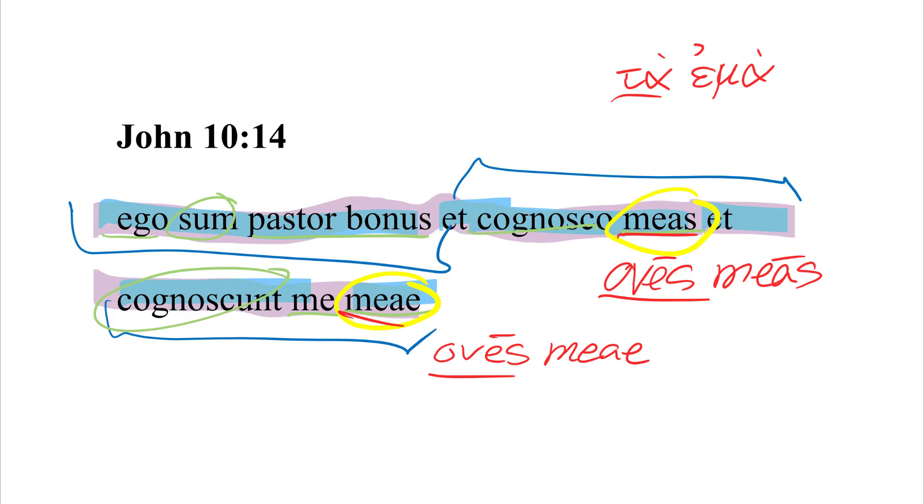It may seem a little stilted when we look at it in Latin, just because it's not the most natural, but the Greek that it is representing is perfectly natural. Recognizing this, when Erasmus comes to this text, he actually does translate it in his version as oves meas, but notably not as oves meae.